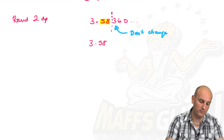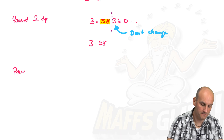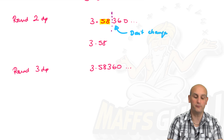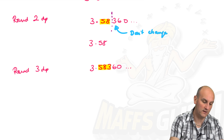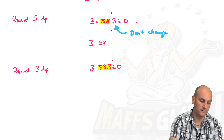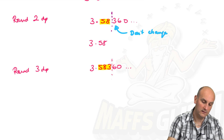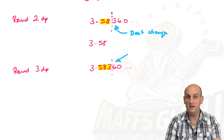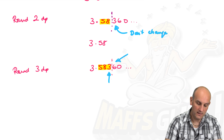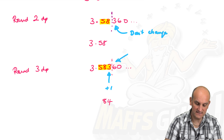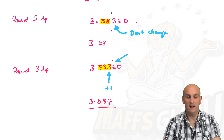Rounding 3.58360 to three decimal places: the three digits after the decimal are 5, 8, 3 — I draw a dotted line. The next digit is 6, which is 5 or more, so I add 1 to the digit before it. The 3 becomes a 4, giving 3.584. The other digits stay as they are.